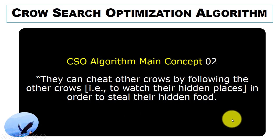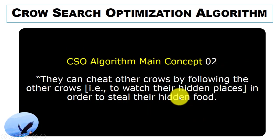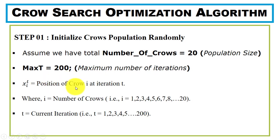This algorithm works on the intelligent behavior of crows: storing excess food in hiding places and retrieving it by memorizing the locations, and stealing each other's food. The first step is the initialization phase, where we initialize the crow population randomly. Suppose the total population size is 20 crows, with a maximum of 200 iterations. We can display the position for any crow using notation where i is the crow number and t is the current iteration.